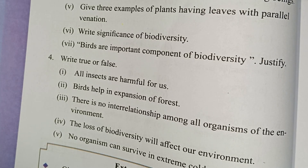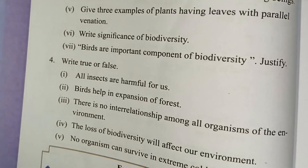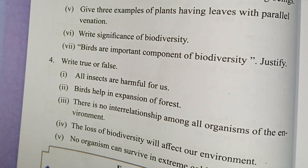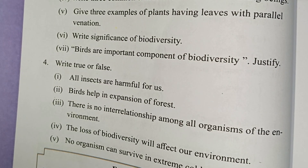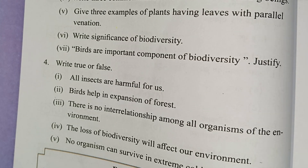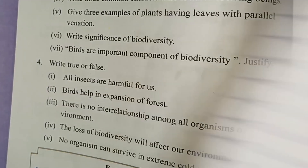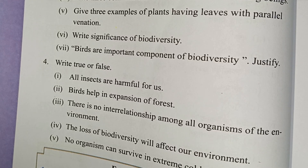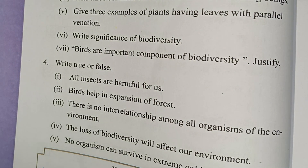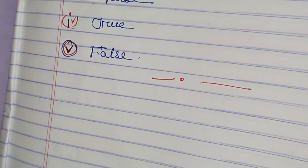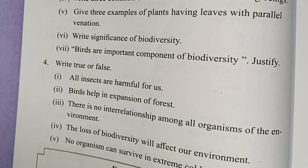Question number four: Write true or false. Number one: All insects are harmful for us. Answer: False. Number two: Birds help in the expansion of forests. Answer: True. Number three: There is no interrelationship among all organisms of the environment. Answer: False. Number four: The loss of biodiversity will affect our environment. Answer: True. Number five: No organism can survive in an extreme cold region. Answer: False.